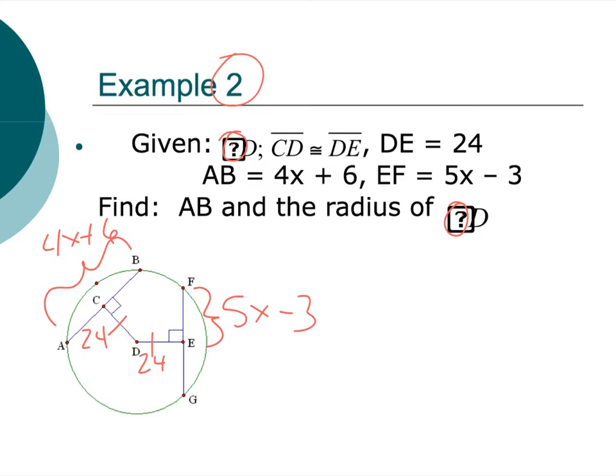Okay. Well, it looks like those two chords, AB and FG, are equidistant to the center. So I know that AB has to be congruent to FG. Okay. All right. So those two guys are congruent. So what can we do here? Well, I know the length of AB is 4x plus 6. And I know the length of basically half of FG is 5x minus 3. And how did I know it was half? Well, if I have a chord and a radius drawn to it and perpendicular to it, I know that it bisects it. So these two guys are equal to each other.